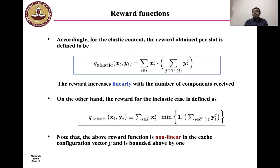On the other hand, the reward for the inelastic case is defined to be sum of xt_i · product with minimum of the all-one vector and sum of yt_j over all caches j connected to the user i. So here, there is an upper bound of the reward that the user i can obtain. The reward function is non-linear in the caching configuration vector y and bounded above by one. So it clearly takes into account the inelastic nature of the content. In our paper, we consider reward functions of both of these forms.